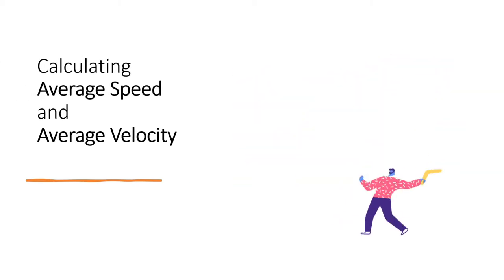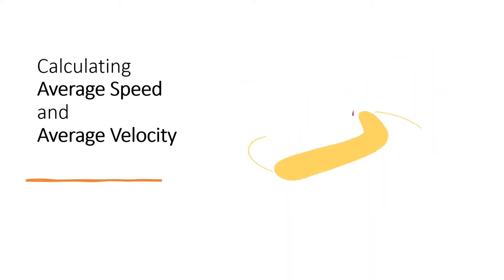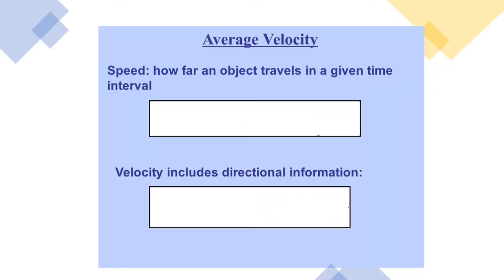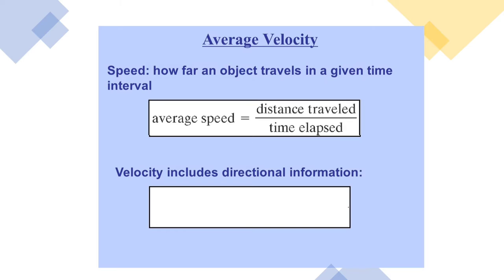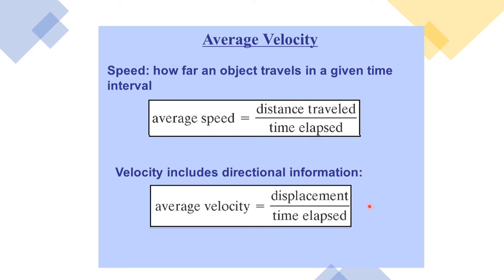For you to understand more, we will proceed to calculating average speed and average velocity. We need equations. For speed, the formula is: average speed equals distance traveled over time. For velocity, the formula is: velocity equals displacement over time elapsed. The key difference is speed uses distance while velocity uses displacement. Remember these equations because we will use them later.